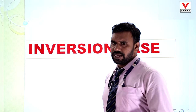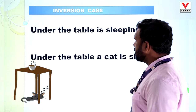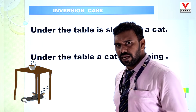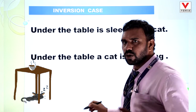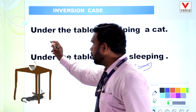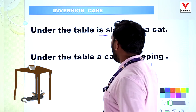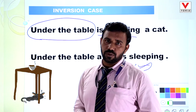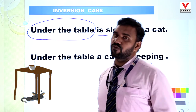I have written two sentences — you have to read them and answer which one is correct. First: 'Under the table is sleeping a cat.' Second: 'Under the table a cat is sleeping.' Most of you will answer that the second one is correct because it sounds natural, but remember, the first one uses inversion case and is correct. Because at the beginning of a sentence an adverbial place is used, whenever a sentence starts with a place adverb, we use inversion case.